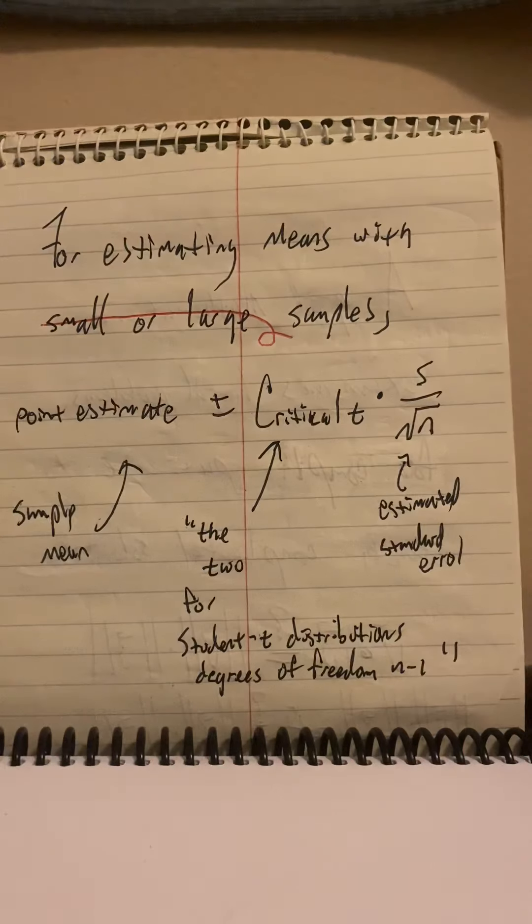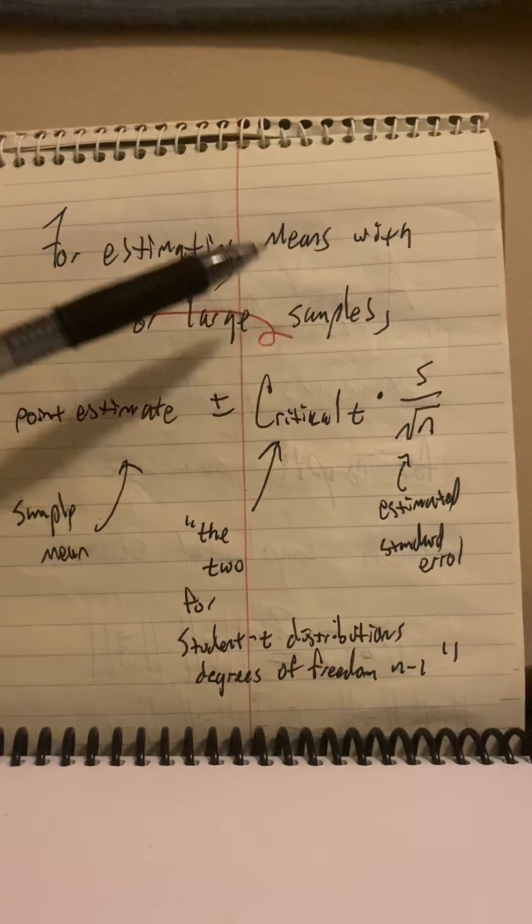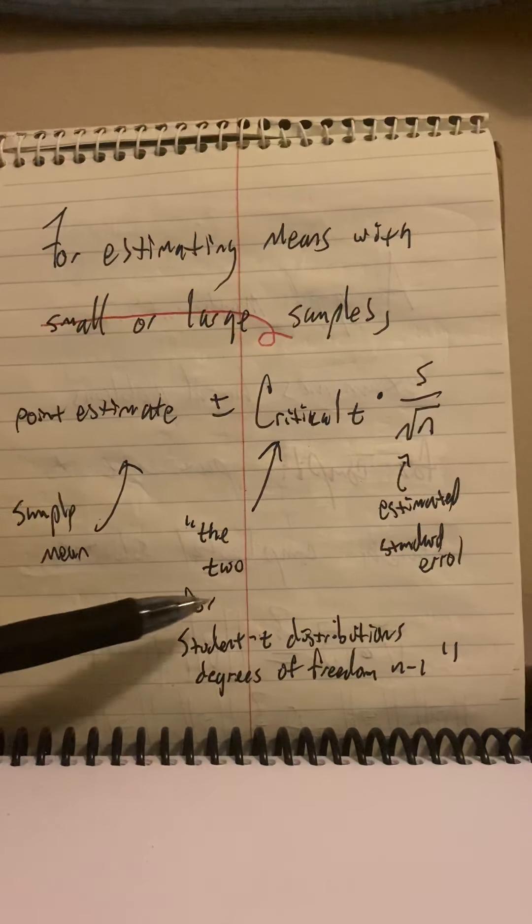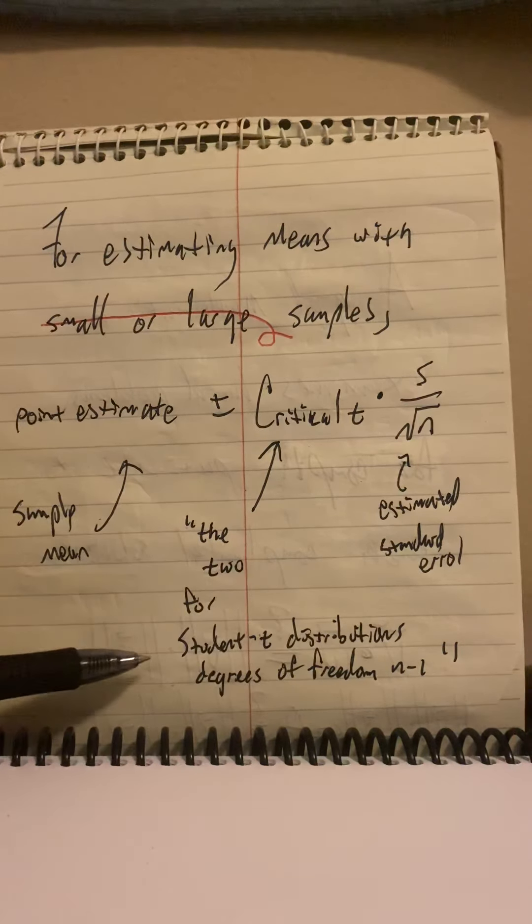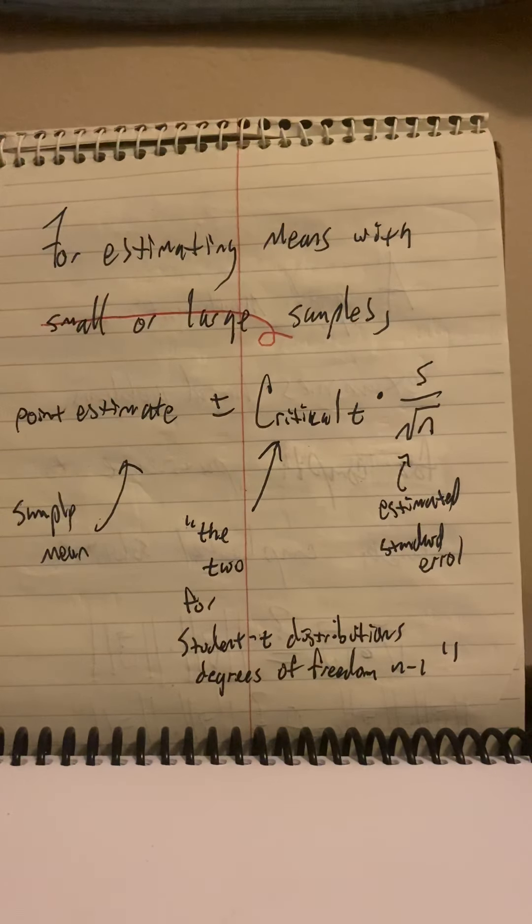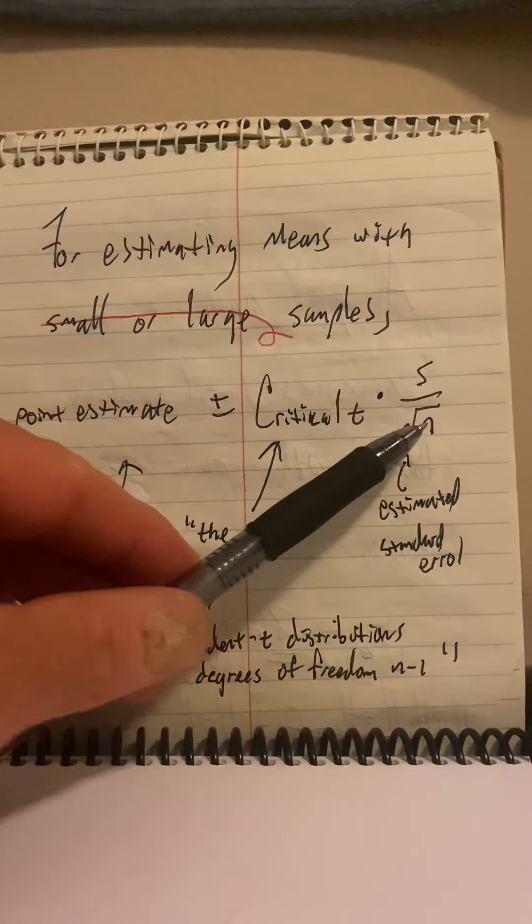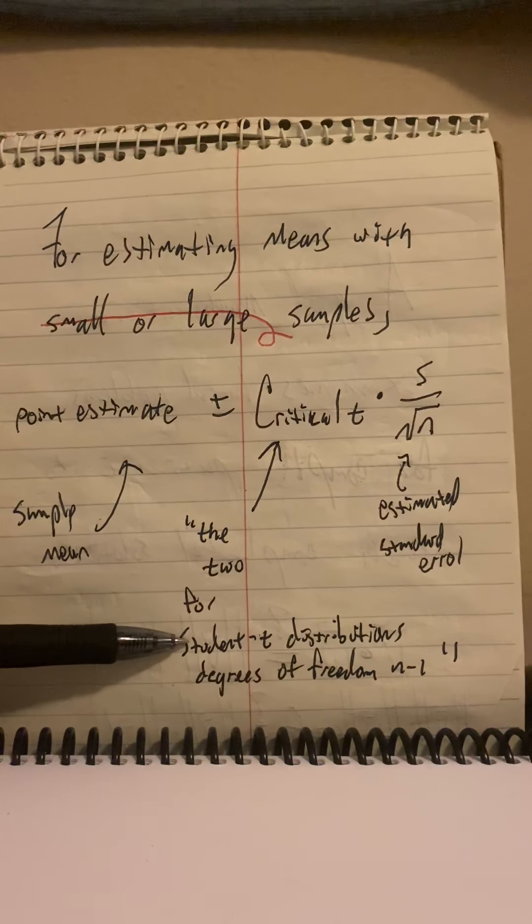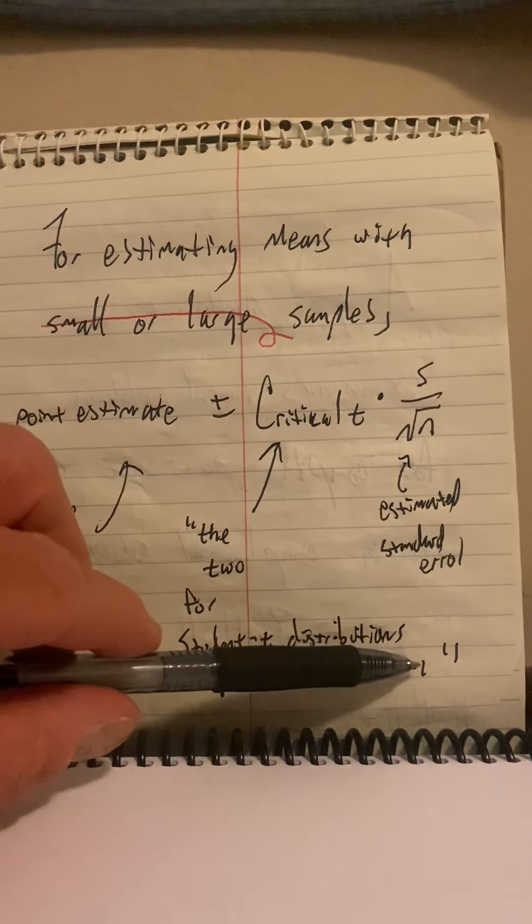For estimating means with samples, we actually use something called the student T distribution. There's an infinite number of these, and it depends on your sample size. We learned from the central limit theorem that there are different sampling distributions. If I take a bunch of samples of size 30 and get all the possible sample means, I'll have a different sampling distribution than if I took all the samples of size 50.